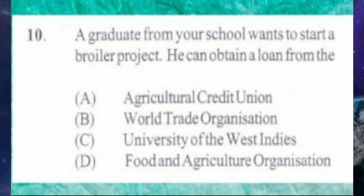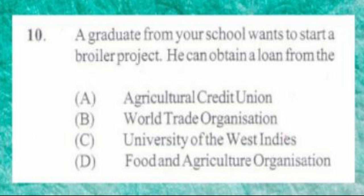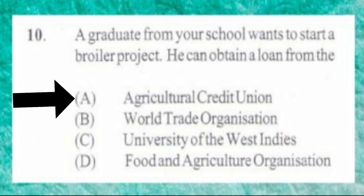Question number 10. A graduate from your school wants to start a broiler project. He can obtain a loan from the: A. Agricultural credit union, B. Royal trade organization, C. University of the West Indies, D. Food and Agriculture Organization. The answer is A, agricultural credit union.